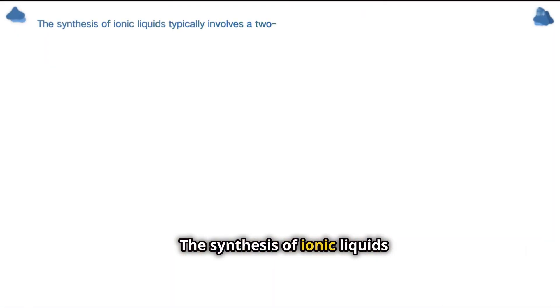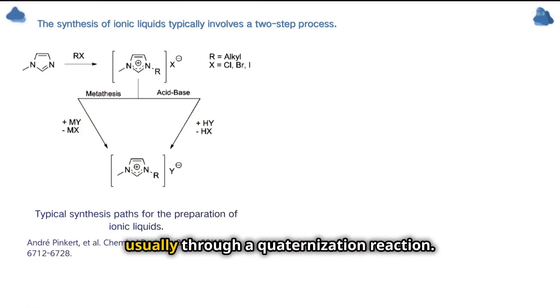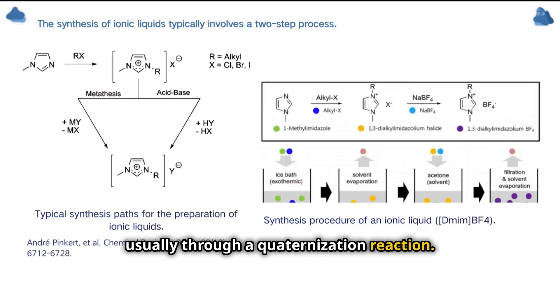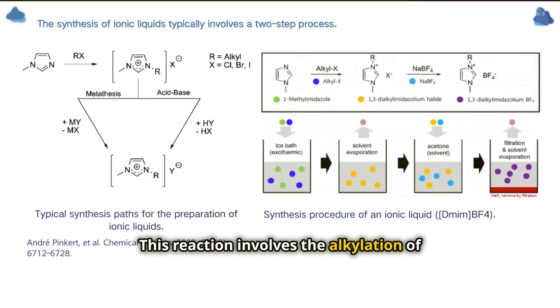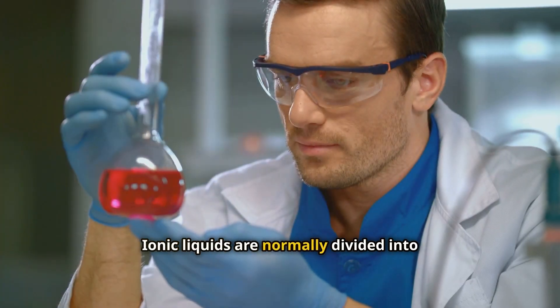The synthesis of ionic liquids typically involves a two-step process. The first step involves the formation of the desired cation, usually through a quaternization reaction. This reaction involves the alkylation of a nitrogen-containing heterocycle, such as imidazole or pyridine, with an alkyl halide or alkyl sulfate. The second step involves anion exchange, where the halide or sulfate anion from the previous step is replaced with the desired anion.